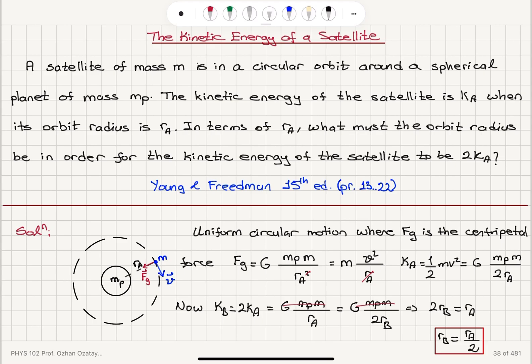So we talked about the kinetic energy of a satellite which has mass m in uniform circular motion around the spherical planet mass mp. In uniform circular motion, we need a centripetal force, and this centripetal force in this setup is the gravitational force, which is G, product of the masses, divided by the radial distance squared, which is equal to mass times the centripetal acceleration v square over r. We can see one of these r's cancel.